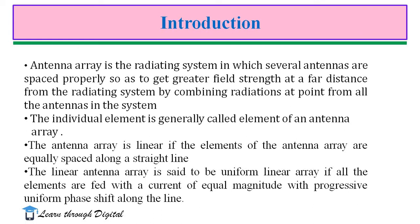In general, the total field produced by an antenna array at a far distance is the vector sum of the fields produced by the individual antennas of the array. The individual element is generally called the element of an antenna array. The antenna array is said to be linear if the elements of the array are equally spaced along a straight line. The linear antenna array is said to be a uniform linear array if all the elements are fed with a current of equal amplitude with a progressive uniform phase shift along the line. In general, the element in the antenna array is a lambda/2 dipole, that is, a half-wave dipole.